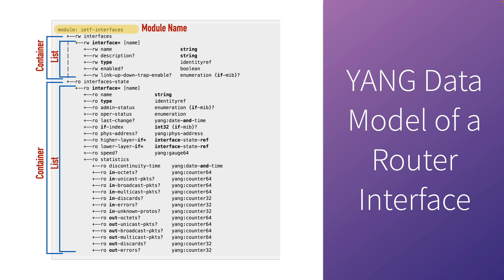On the RW interface, the name is going to be the name of our interface, and that is called the key. The different parameters we can specify for that interface are each called a leaf. For example, RW description is a leaf representing a description of an interface, with a data type of string — meaning alphanumeric characters describing the purpose of that interface. Other times we might specify a different data type; for example, RO last-change, where we query the device for the date and time of the last change. Notice that's not a string — it's another model: yang:date-and-time. This module is not yet populated; it's just the structure that we could populate.